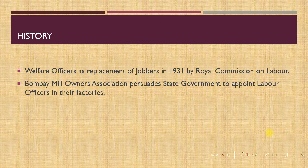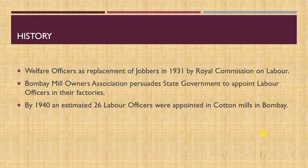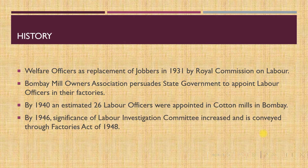In 1934, the Bombay Mill Owners Association persuaded the state government to appoint labour officers in their factories to oversee the welfare activity of their employees. By 1940, an estimated 26 labour officers were appointed in cotton mills in Bombay. During World War II, police functions changed to welfare functions in factories and establishments. By 1946, the significance of the labour investigation committee increased, and this was conveyed through the Factories Act of 1948.